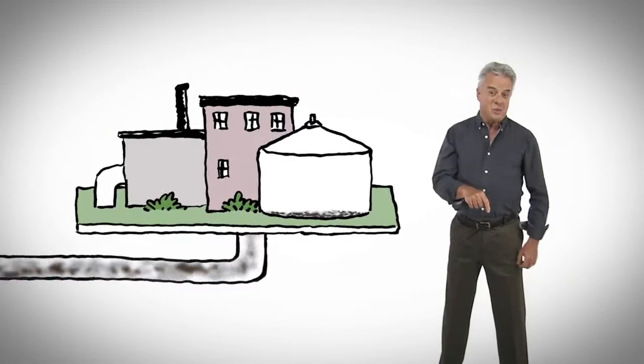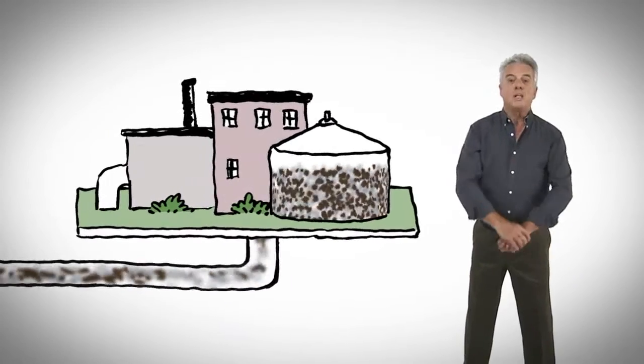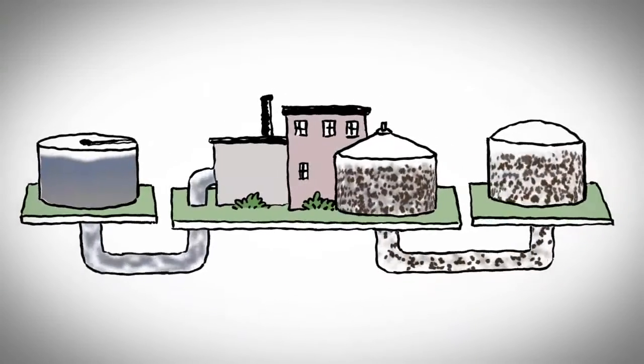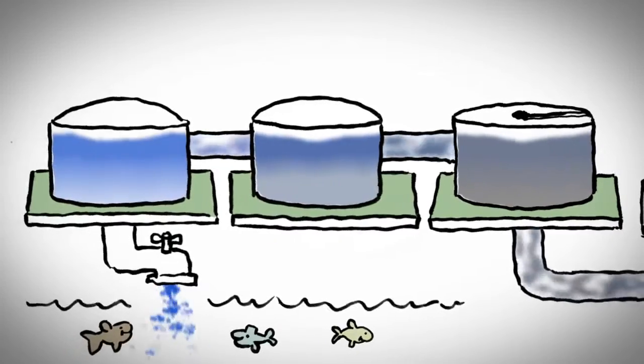Now, what goes down the drain in your home winds up in one of 13 of the region's wastewater treatment plants, and that's where they separate the liquids from the solids. The liquids are cleaned up and they're returned to the Grand River.